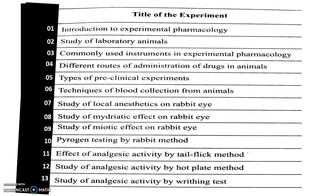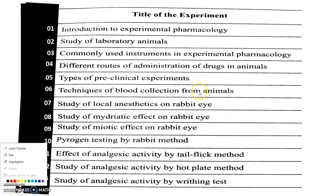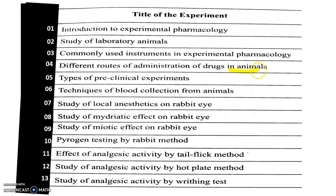Experiment number four covers the different routes of administration by which we can administer doses into animals, and after administration, we find out the different effects. Experiment number five covers the types of preclinical experiments — preclinical means the study conducted on animals only, studying the effect of drugs on animals. Experiment number six covers different techniques to collect drug samples from animals. Experiment number seven covers local anesthetics using a rabbit.